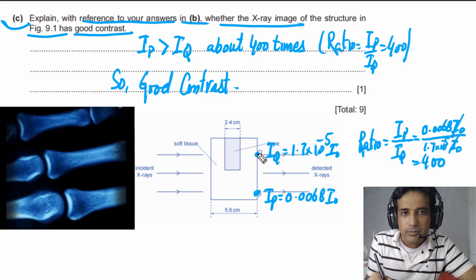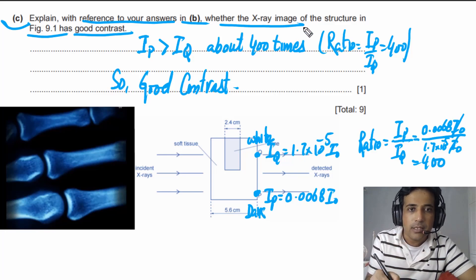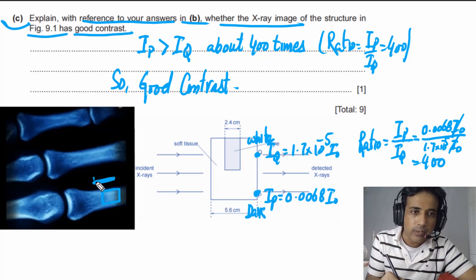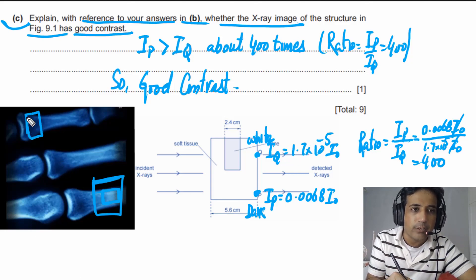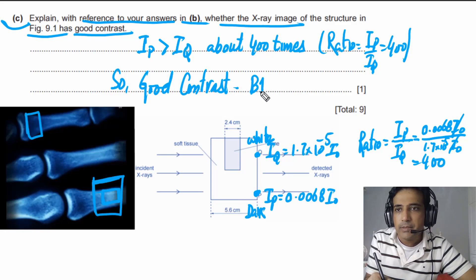Good contrast means fewer X-rays reach point Q (through bone), so that area appears white on the image, while more X-rays reach point P (through soft tissue), making it darker. The large difference between these intensities produces a clearly distinguishable image. This question awards one mark for correctly identifying good contrast with reference to the ratio.